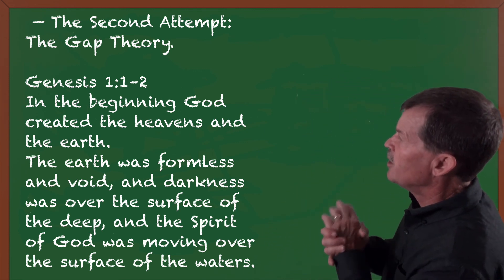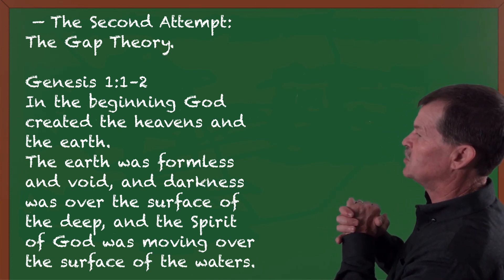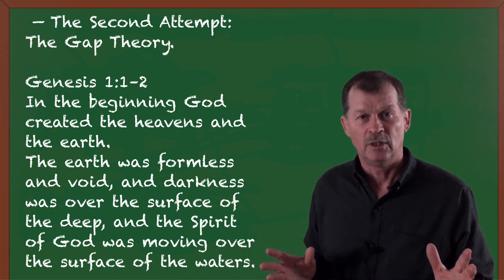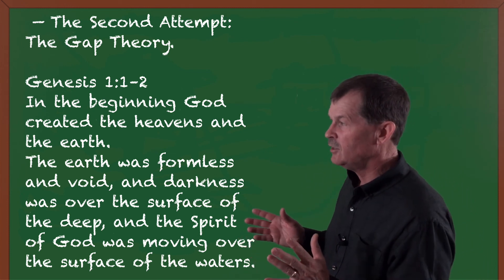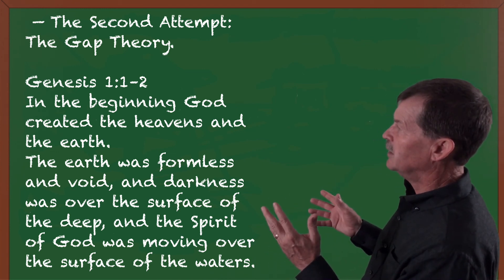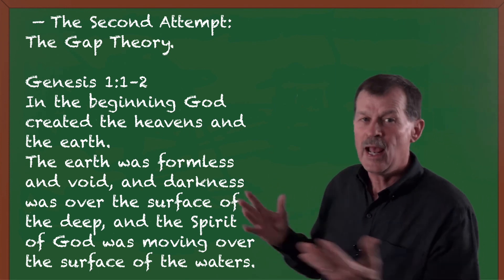And then we continue reading, The earth was formless and void, and darkness was over the surface of the deep. And so then the question is, what happened? Because God creates everything good and orderly, and now the earth is formless and void, and darkness. What happened?